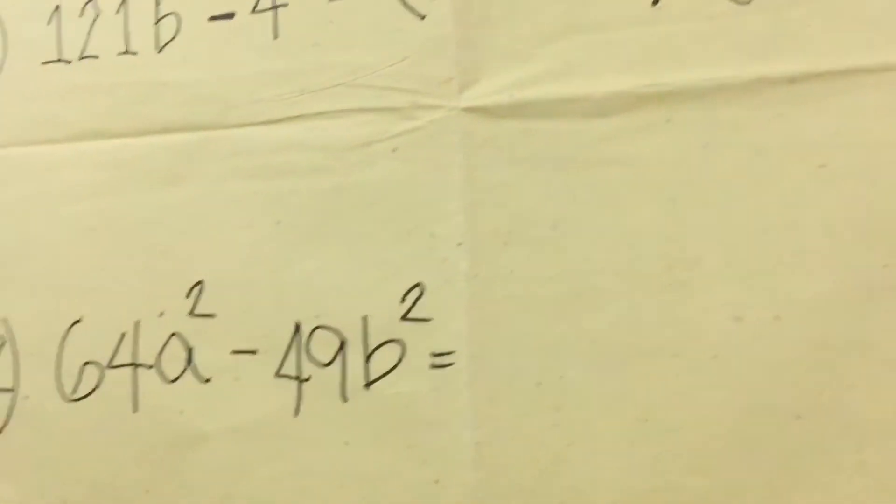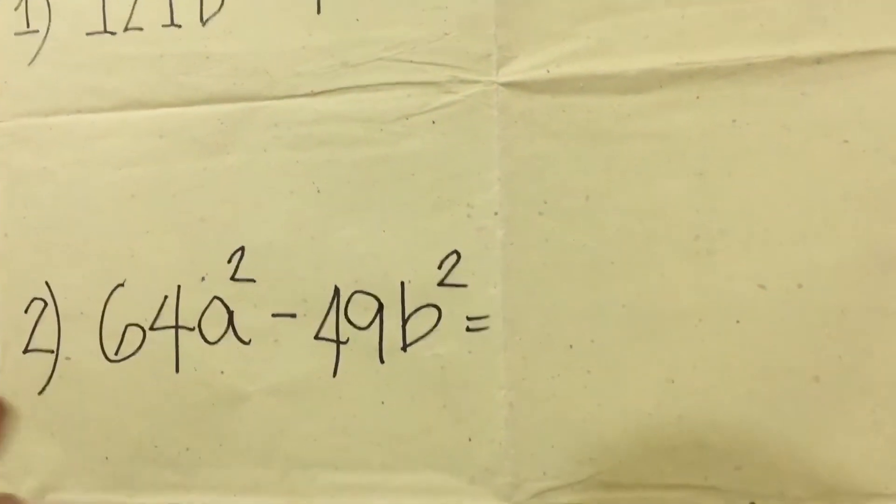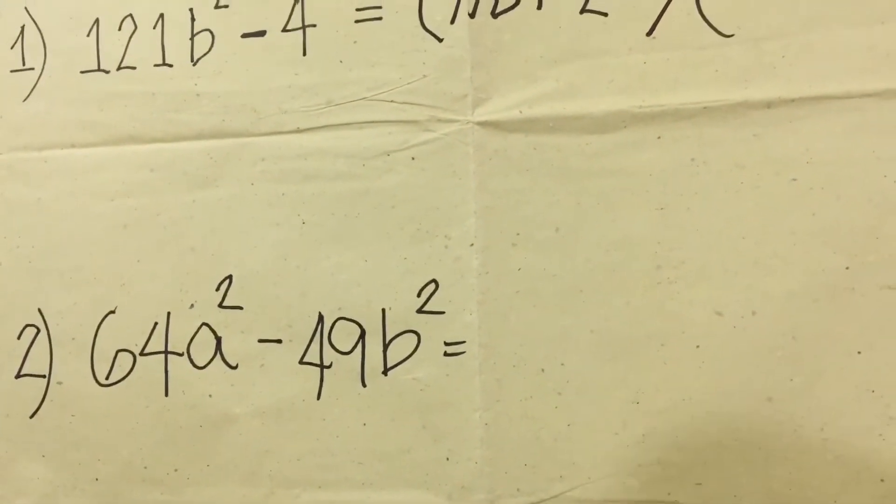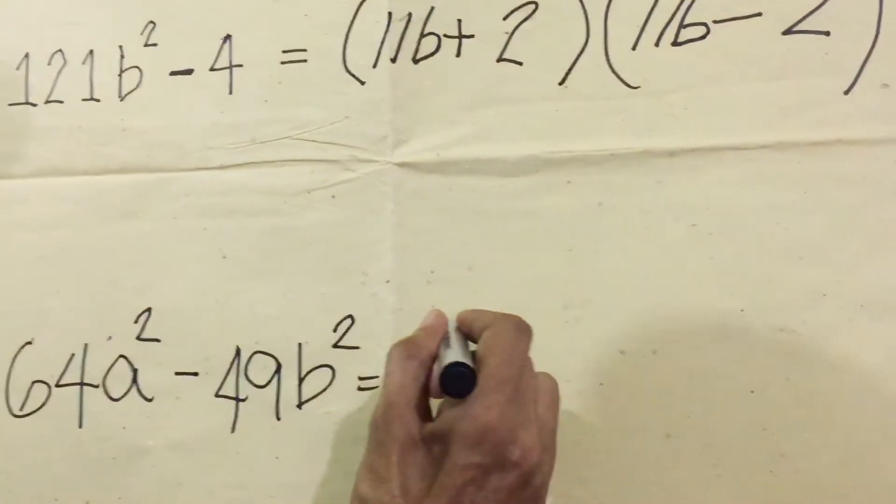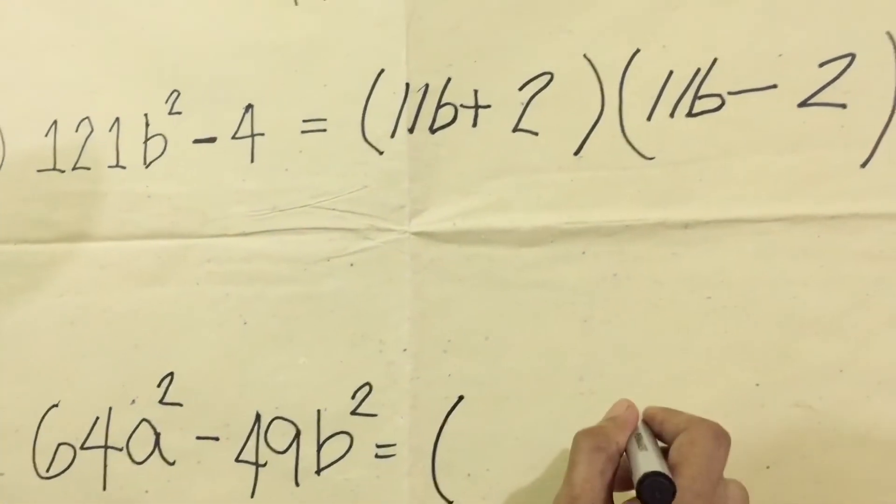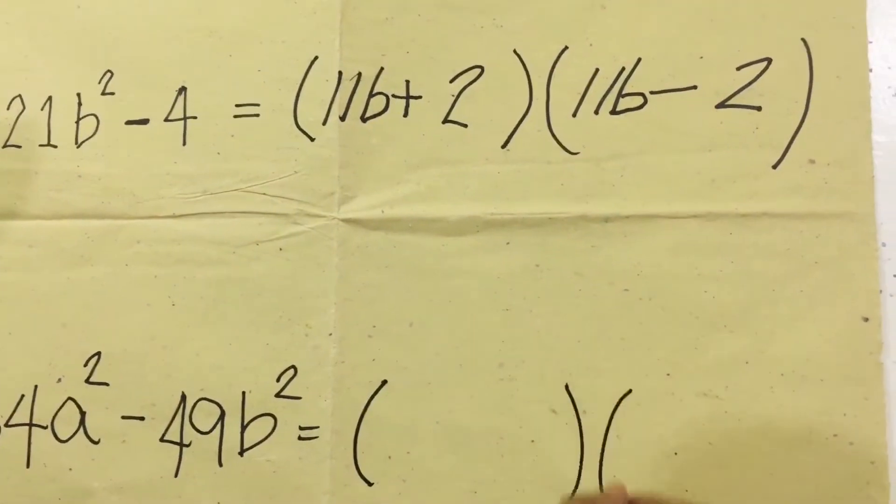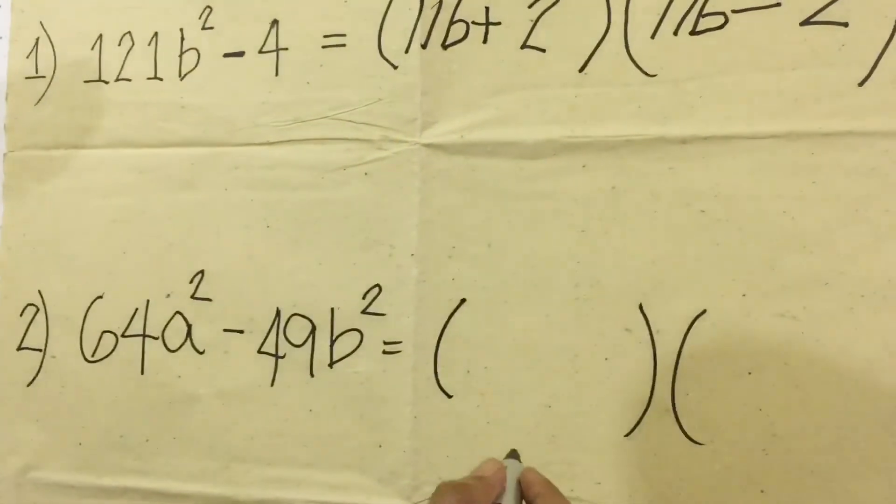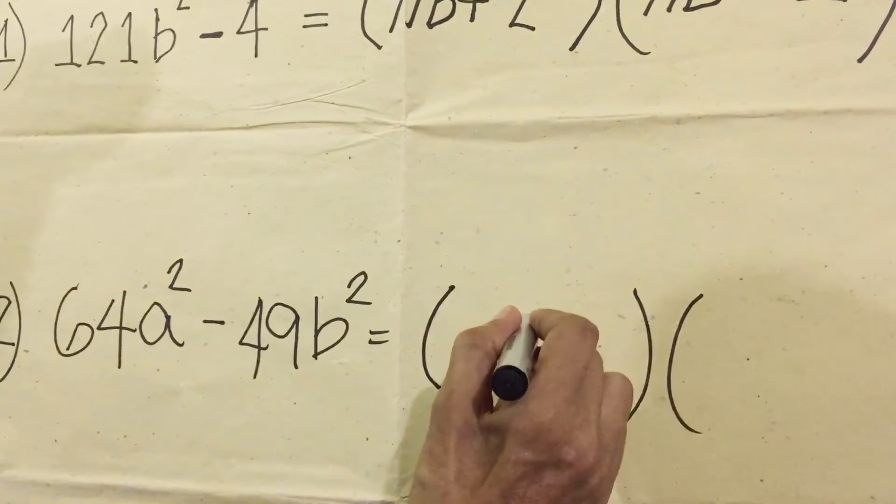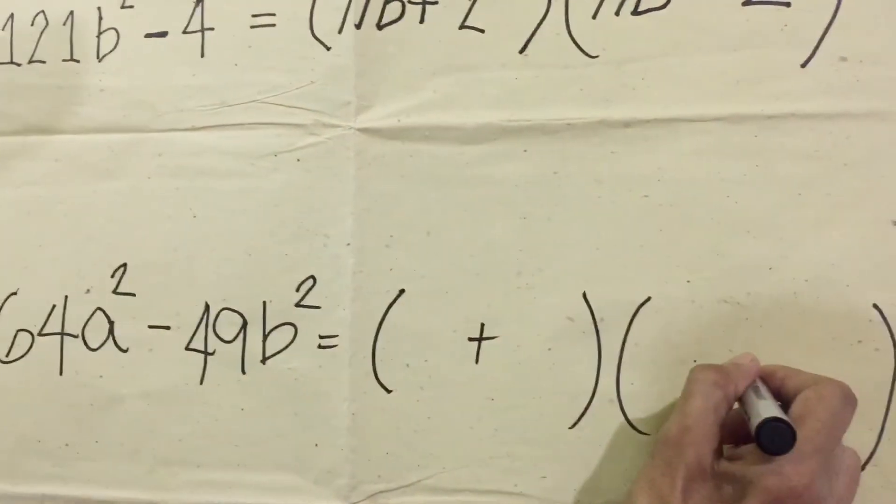Next is the same process. To factor the difference of two squares, we will write first the two parentheses, or we will make first two parentheses, and one positive and one negative.